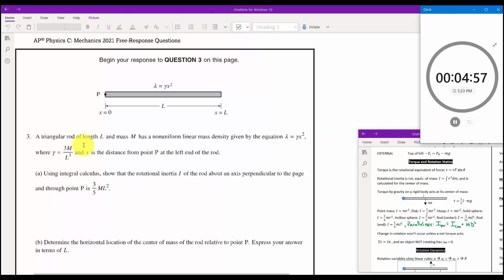So it says a triangular rod. Triangle doesn't matter. There's no bearing on this. That's just stupid college board trying to confuse you. A triangular rod of length L and mass M has non-uniform linear density, mass density given by the equation lambda equals gamma X squared, where gamma is equal to 3M over L cubed. So lambda is 3M over L cubed times X squared. X is the distance from point P at the left end of the rod.